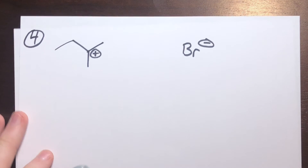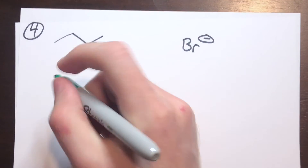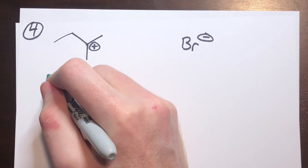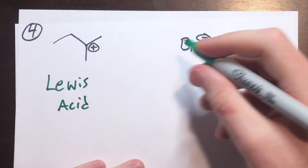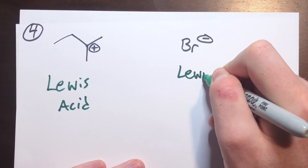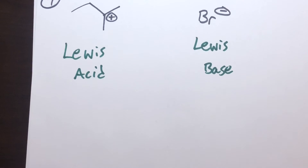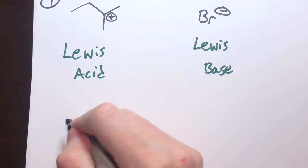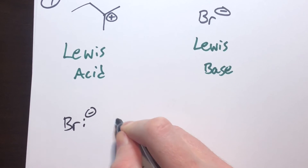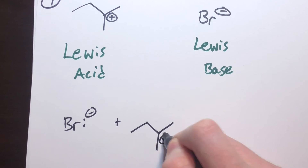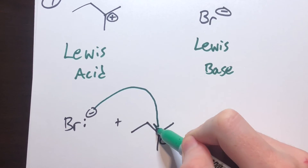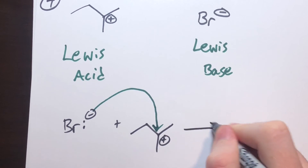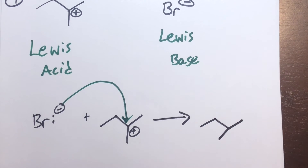Moving to the next example: there is a positive charge on one molecule, which is a Lewis acid because it is lacking a fourth bond at the carbon — that's what causes the positive charge. The bromine then has lone pairs with a negative charge, so it is the Lewis base. Drawing the reaction with curved arrows: the lone pairs and negative charge on bromine create a bond to the positively charged carbon, giving the final neutral product.